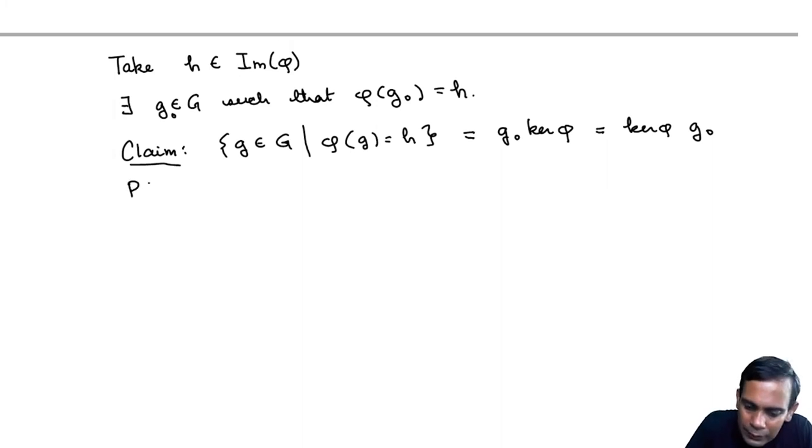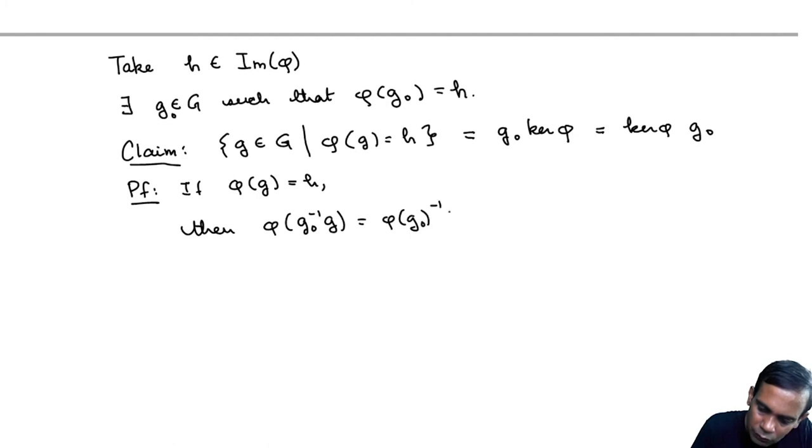The proof is quite easy. If phi G is equal to H, then phi of G0 inverse G is phi G0 inverse phi G by the properties of homomorphisms. But phi G0 inverse is H inverse, and phi G is also H. So this is H inverse H, which is the identity of H.